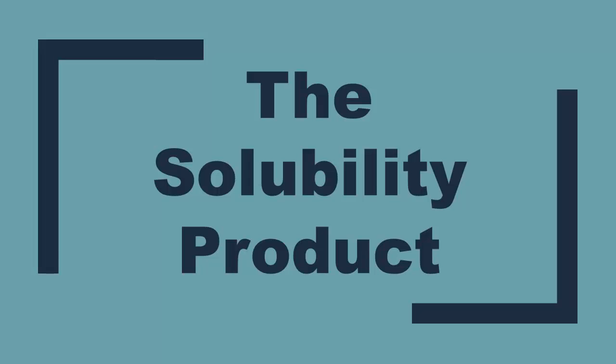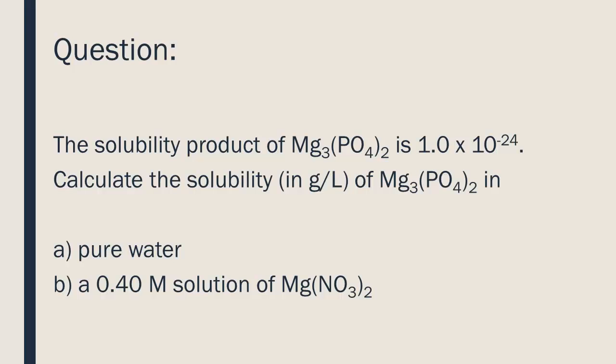The solubility product of Mg₃(PO₄)₂ is 1.0 × 10⁻²⁴. Calculate its solubility in grams per liter in A, pure water, and B, a 0.40 moles per liter solution of Mg(NO₃)₂.